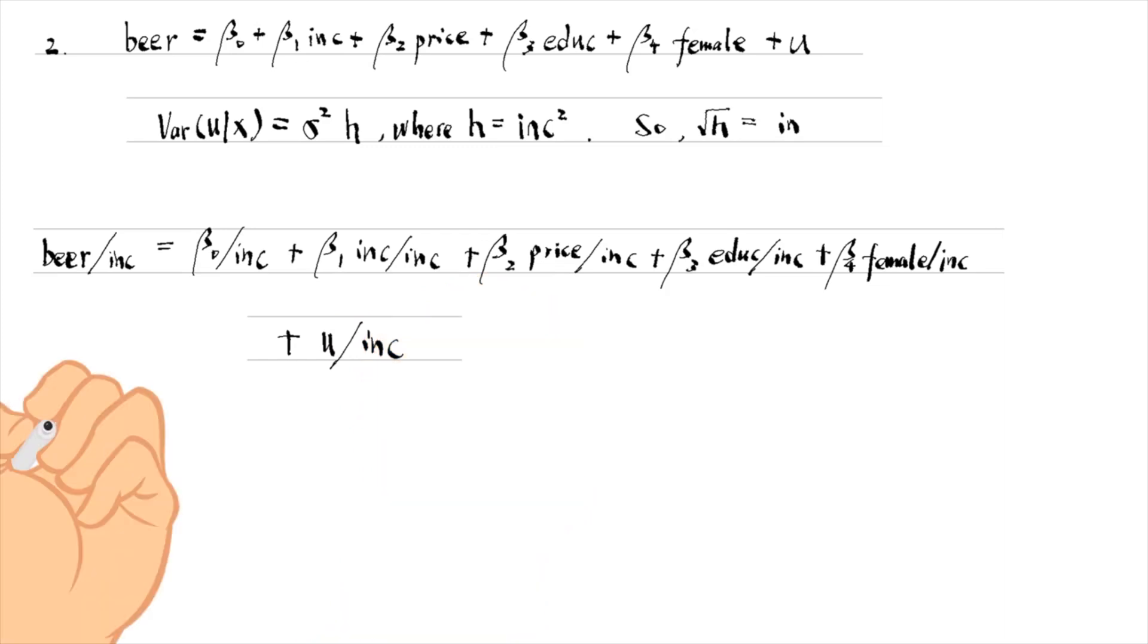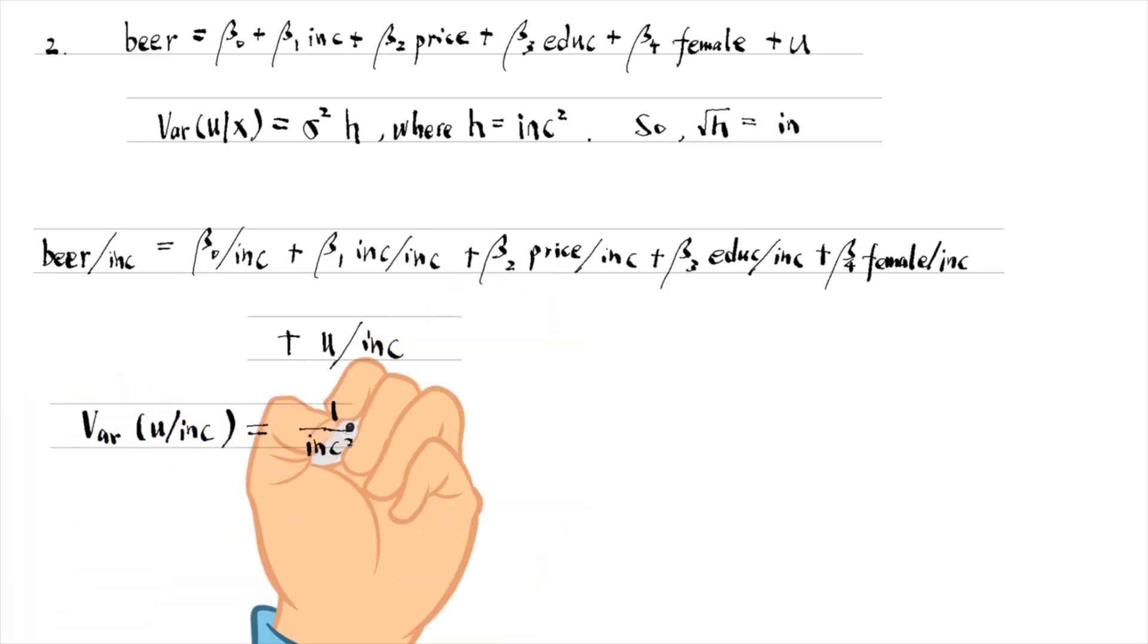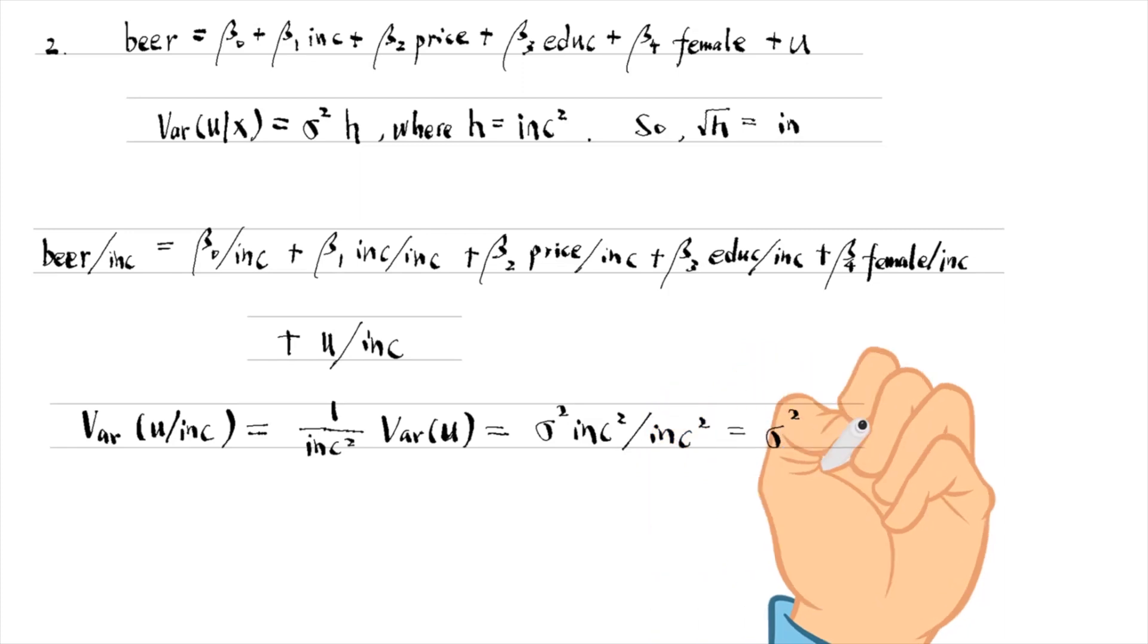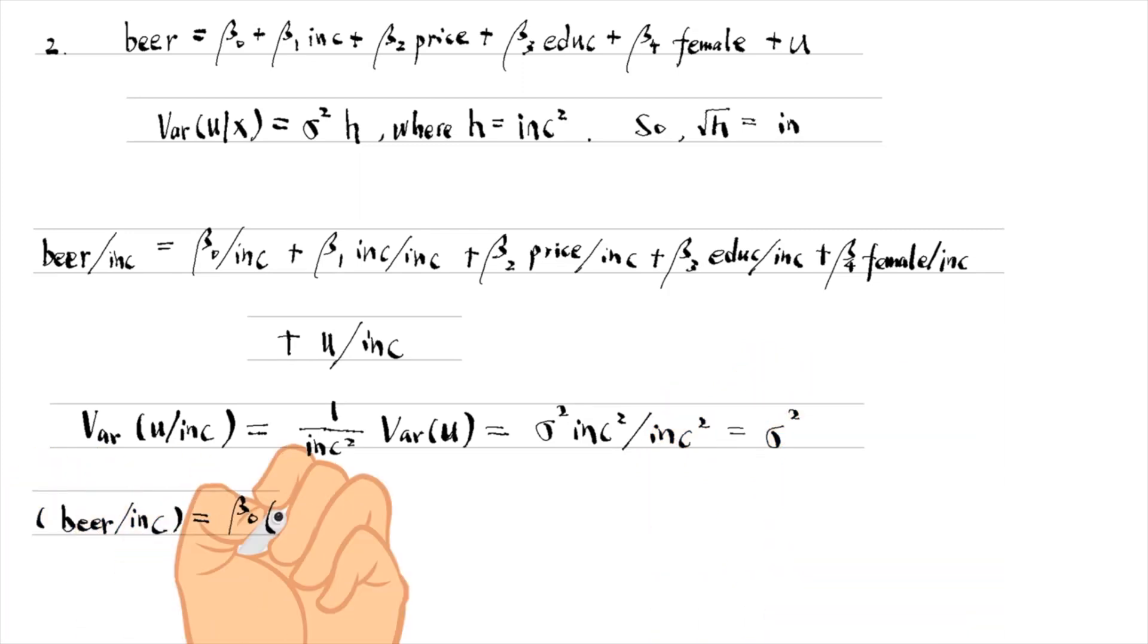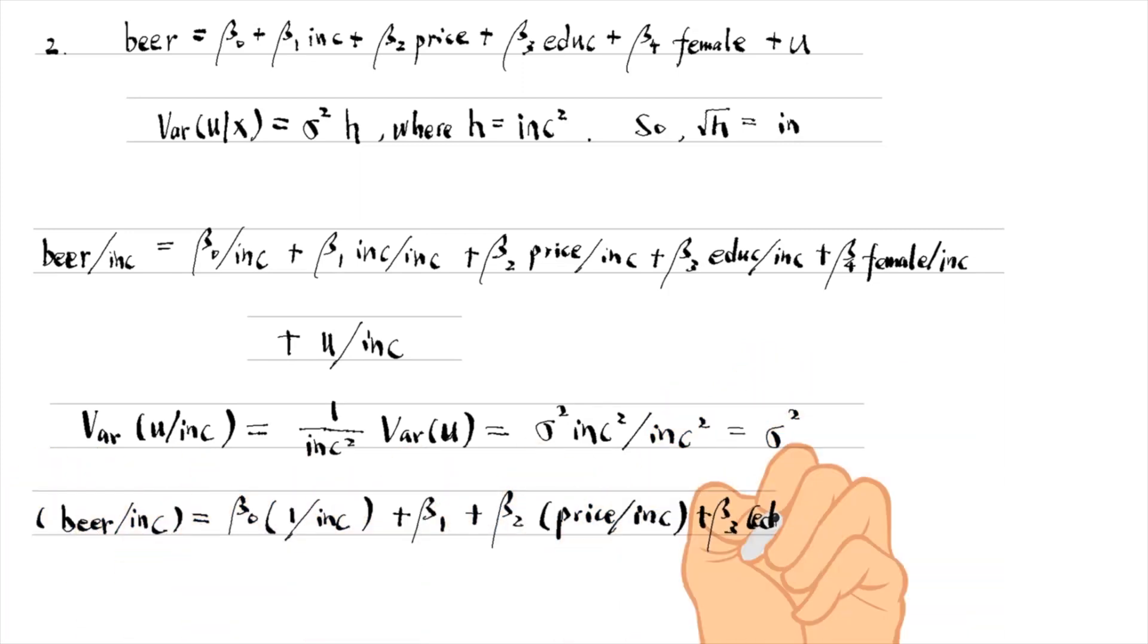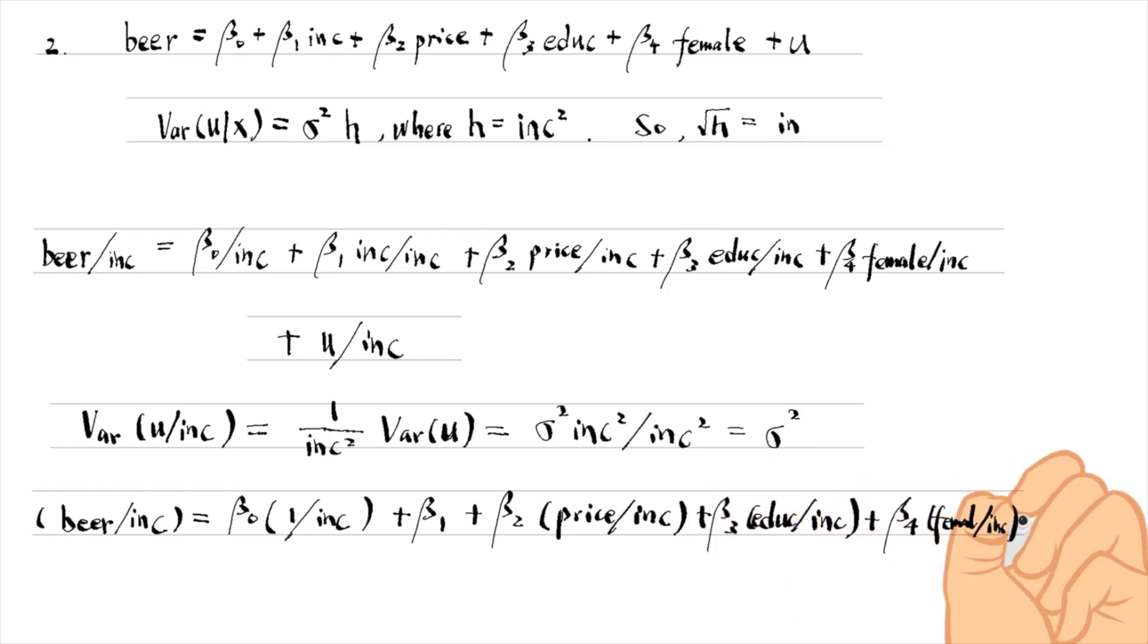We can show that the new error term has a constant variance. From the transformed equation, we find that the intercept is beta1, which is the coefficient on income in the original equation.